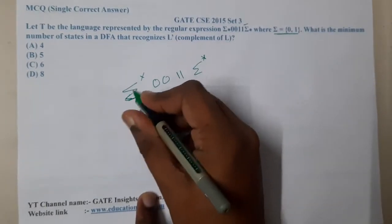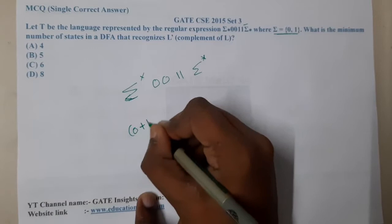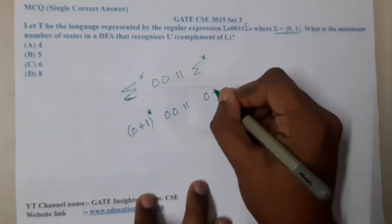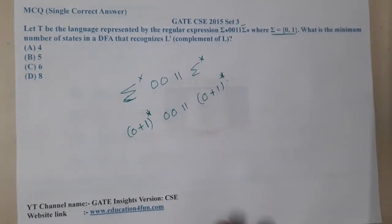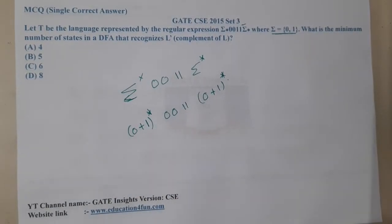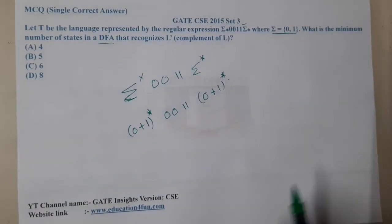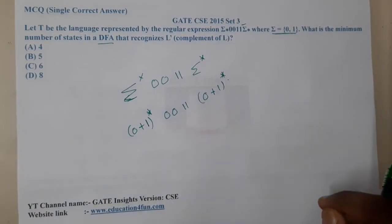So basically what do they mean by sigma star? It is nothing but (0+1)* 0011 (0+1)*. So now they are asking what is the minimum number of states in a DFA that recognizes L complement. So here is the funny thing.